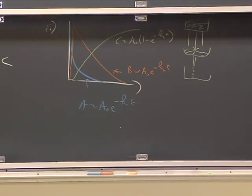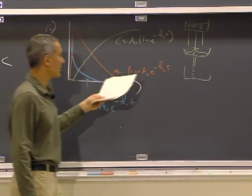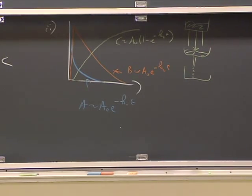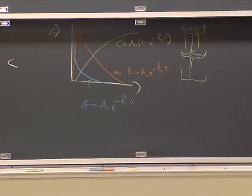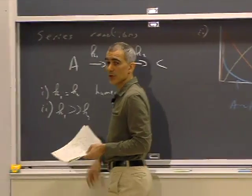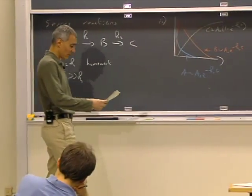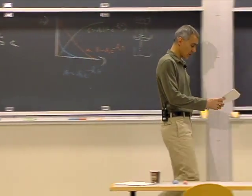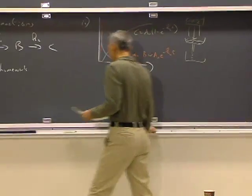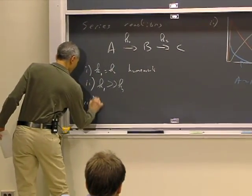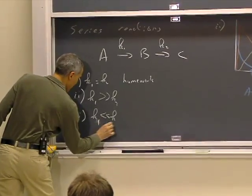The rate constant K2 dominates the long times, and everything looks like pseudo first order at long times. You can solve the problem by thinking about it, or by solving it exactly and then putting in the right approximations—in this case Taylor's approximation. The third case is the opposite: K1 much less than K2.